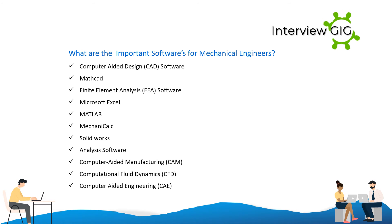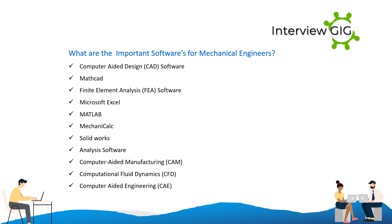What are the important softwares for mechanical engineers? Computer-aided design (CAD) software, MathCAD, finite element analysis (FEA) software, Microsoft Excel, MATLAB, Mechanicalc, SolidWorks, analysis software, computer-aided manufacturing (CAM), computational fluid dynamics (CFD), and computer-aided engineering (CAE).